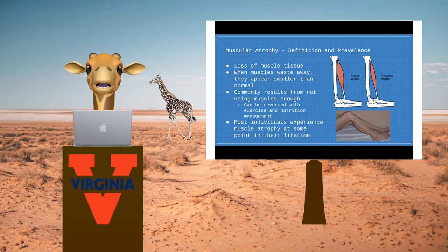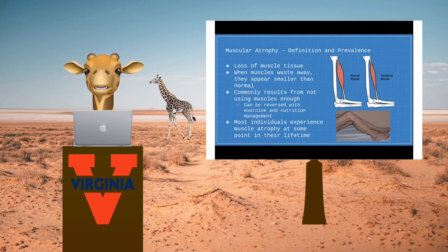Muscle atrophy is very common and is caused by a variety of factors, so most individuals experience it at some point in their lifetime, especially as they age.